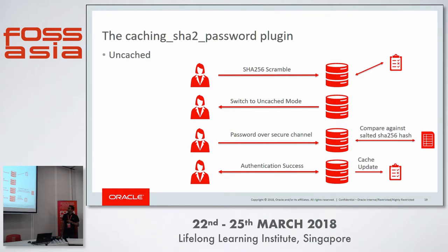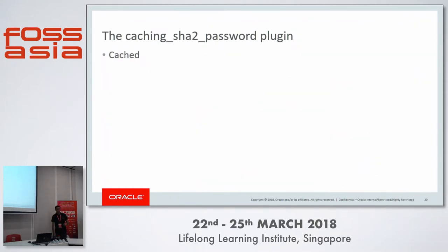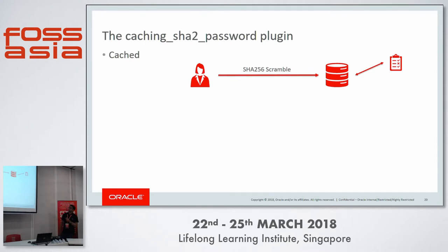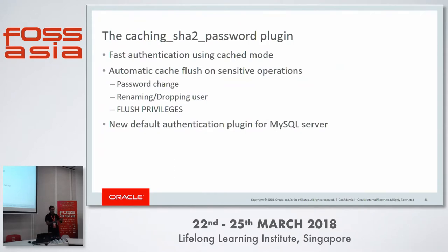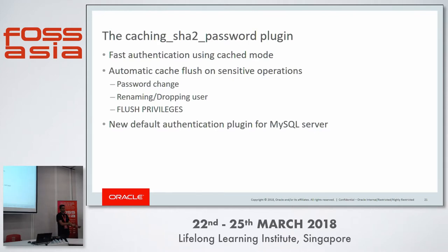At the same time, the server updates the cache so that on the next login, the user only needs to send a scramble. The server sends a new challenge, a new response is created and sent back, and this time the server uses the cached password for challenge-response verification — making cache mode faster. The cache persists as long as there are no changes to authentication data. The cache is invalidated on sensitive changes like password change, user rename, DROP USER, or FLUSH PRIVILEGES.